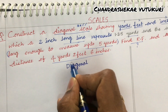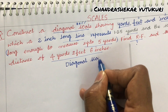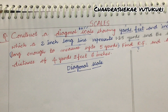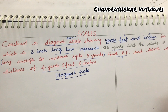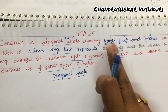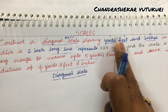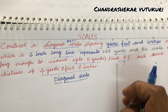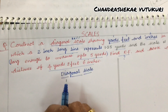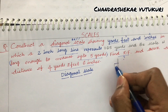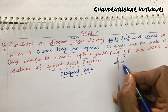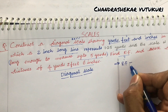A scale which can measure up to 3 consecutive units is said to be a diagonal scale. This scale is given in terms of yards, feet, and inches. You need to know the conversion from yards to feet and feet to inches — if not, you cannot work out this type of question, which will be asked in the examination. The first and foremost step is to work out the RF.